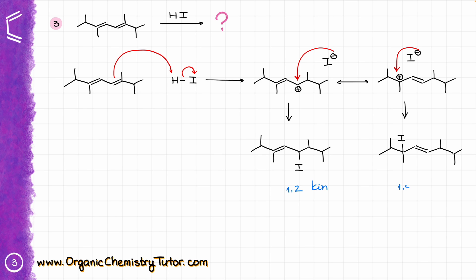The one on the right is going to be our 1,4-product. Looking at the atoms connected to my double bond: on the left I see three atoms connected to my double bond; on the right I see two different groups connected to my double bond. So in this case my double bond on the left is going to be more stable, which means that that is both the kinetic and the thermodynamic product again. Like in the previous example, it doesn't matter how I do this reaction — either at high temperature or low temperature — in both cases my major product is going to be the 1,2-product.